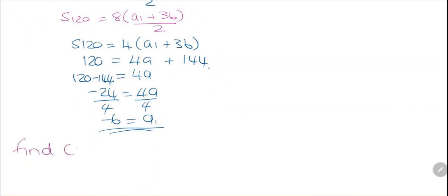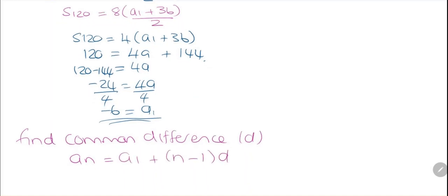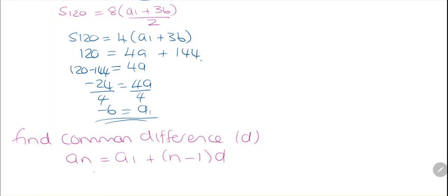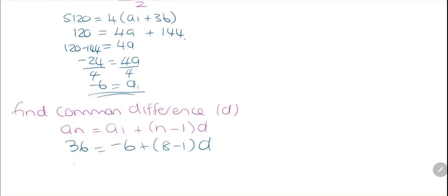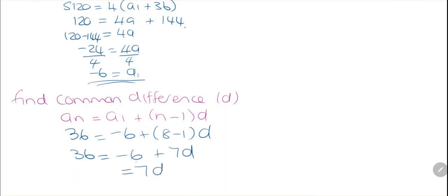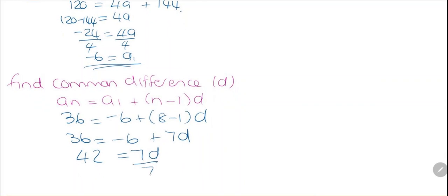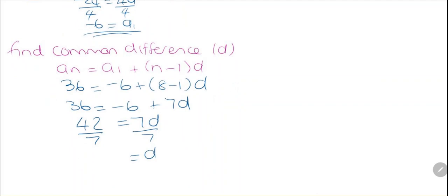Now we know a1 = −6, so we can find the common difference d using the nth term formula: an = a1 + (n − 1) × d. Substituting: 36 = −6 + (8 − 1)d = −6 + 7d. Adding 6 to both sides: 42 = 7d. Dividing both sides by 7, d = 6.